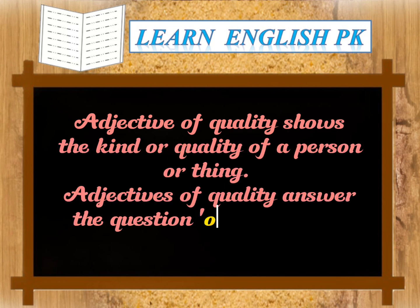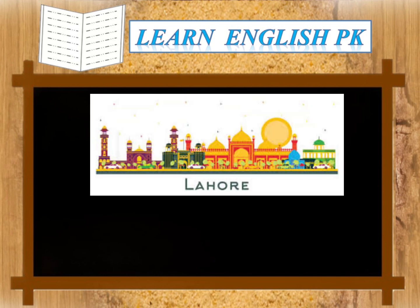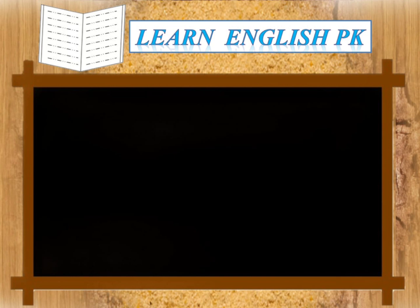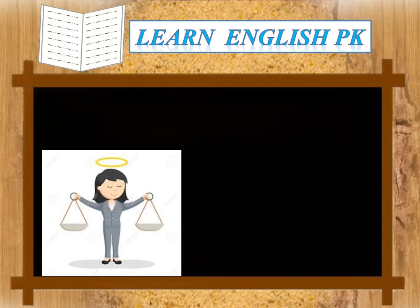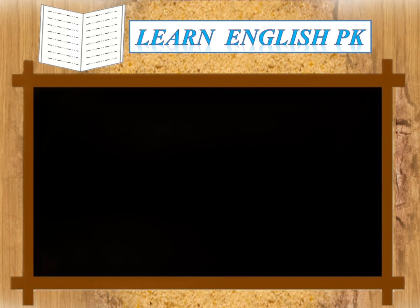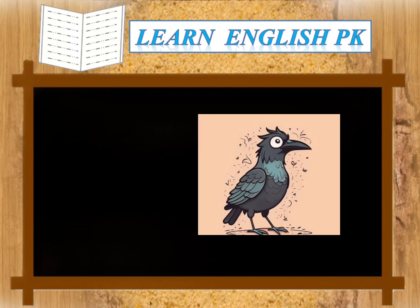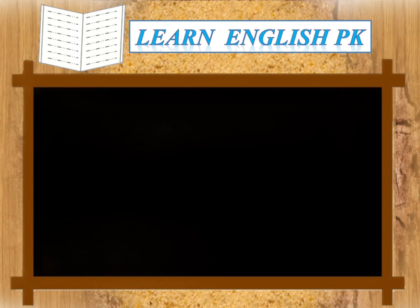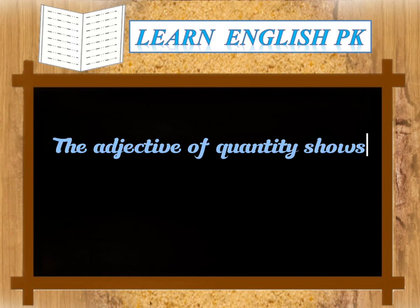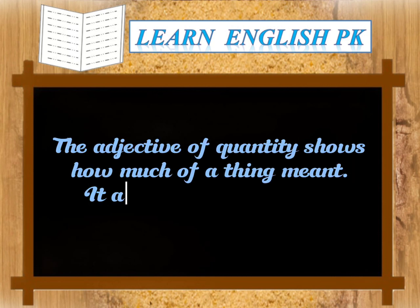Adjectives of quality answer the question 'of what kind?' For example: Lahore is a large city. She is an honest lady. The foolish old crow flew here and there. The adjective of quantity shows how much of a thing is meant — it answers the question 'how much?'